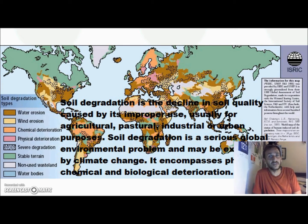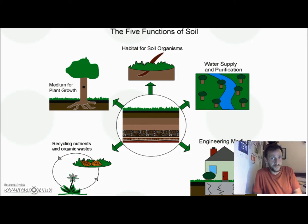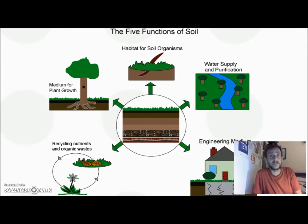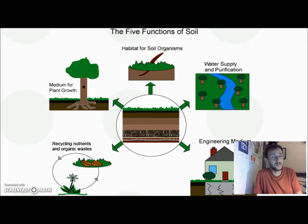But what is soil and what do we need it for? Well, soil is everything. All the soil organisms live in there, so it's a very important living area for plants, animals, and all sorts of creatures. It has a very important function in supplying, purifying and cleaning the water system. It serves as an engineering medium, which means we use soil to build our houses on and into. This is where nature recycles nutrients and organic waste, and it's a very important medium for plant growth.